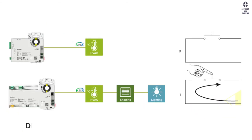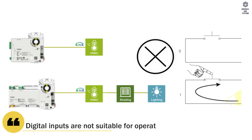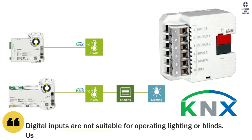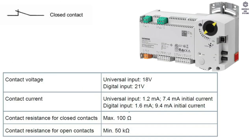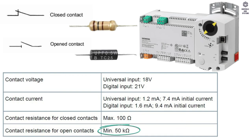Digital input: digital inputs are not suitable for operating lighting or blinds; use KNX PL link push button. Contact resistance for closed contacts is maximum 100 ohms. Open contacts is minimum 50 kilo-ohms. Contact query voltage and current range are shown in the table.